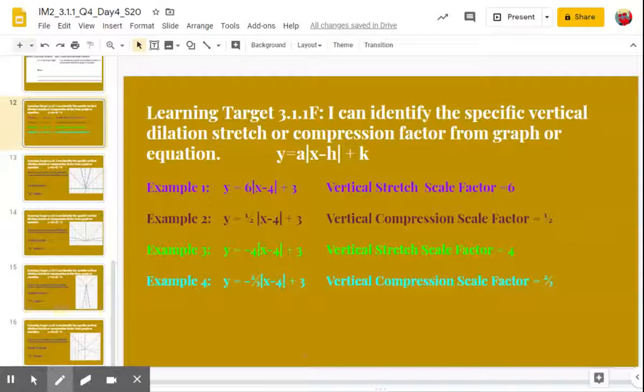Here are your notes for the last section, 3.1.1F. So again, the general form we're using is Y equals A times the absolute value of X minus H plus K. And the way we're going to see the dilation is through the A value. So the A value is a number that's in front of the absolute value bars.